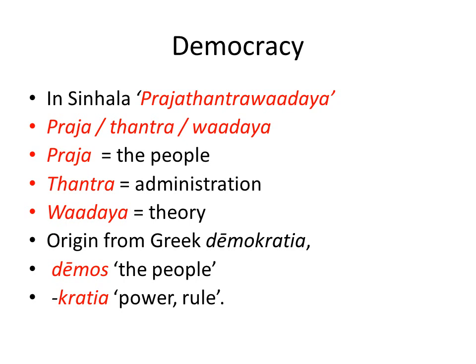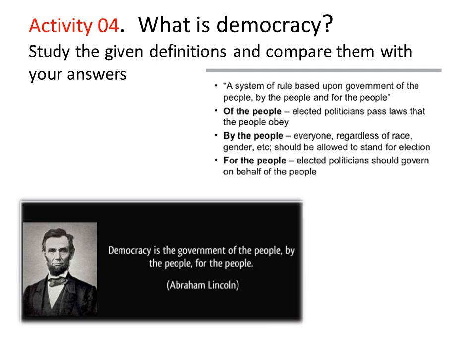The English word democracy was originated in Greek — demokratia. Demos means the people, and kratos means power or rule. Here is the definition given by Abraham Lincoln, the 16th President of the United States of America. You can compare your answers with the definition. According to Abraham Lincoln, democracy is the government of the people, by the people, for the people.